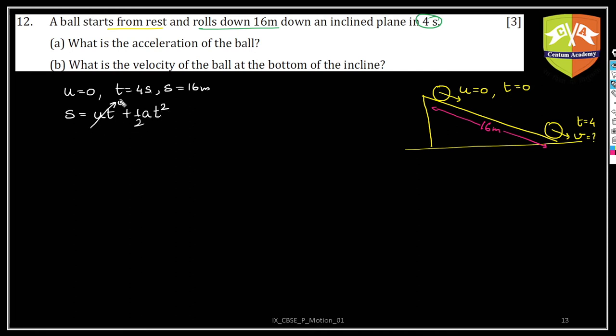S is equal to U T plus half A T squared. Now clearly this is 0. U is 0. So hence A is nothing but 2S by T squared. See I have not deployed the values as of now. I will deploy it only at the end, so that my formula is correct.